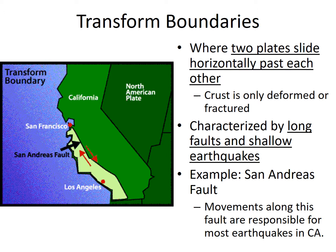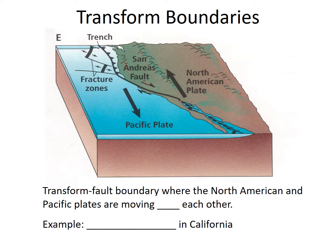Transform boundaries are where two plates slide horizontally past each other. The crust here is only deformed or fractured, and this is characterized by long faults and shallow earthquakes. An example is the San Andreas Fault. Movement along this fault is responsible for most of the earthquakes in California. This is where the North American and Pacific plates are moving past each other.